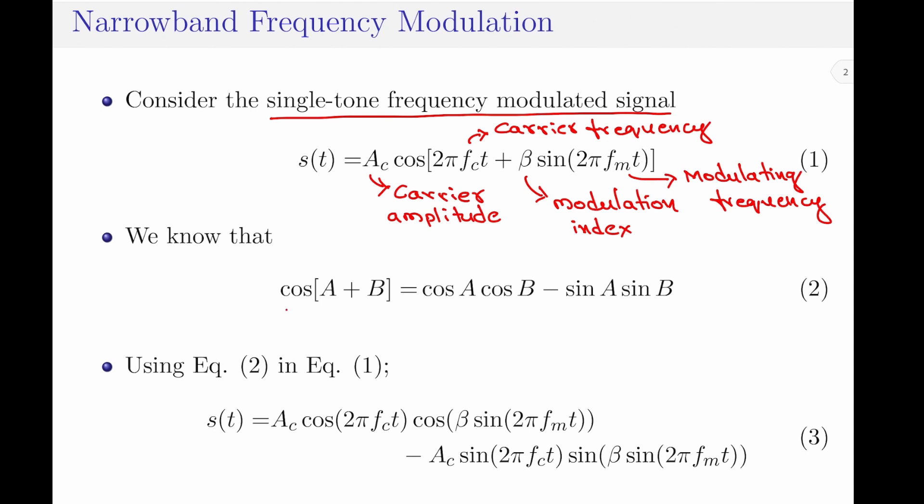Let us now use the trigonometric identity cos(a + b) = cos(a)·cos(b) − sin(a)·sin(b). Substituting this into the right-hand side of equation 1, the single tone frequency modulated signal becomes s(t) = ac · cos(2π·fc·t) · cos(β·sin(2π·fm·t)) − ac · sin(2π·fc·t) · sin(β·sin(2π·fm·t)).